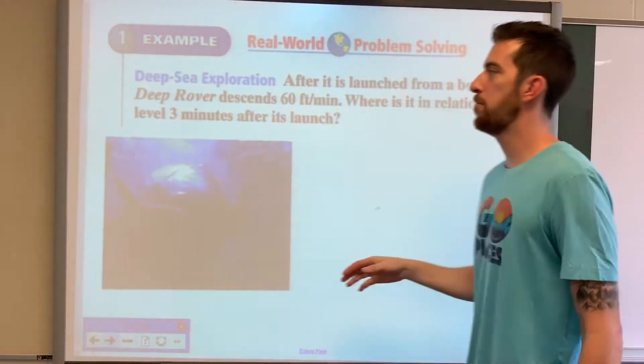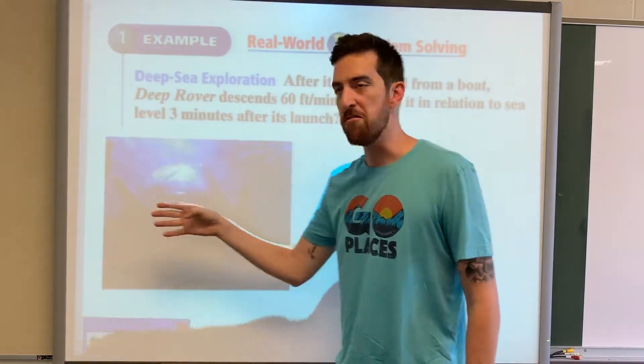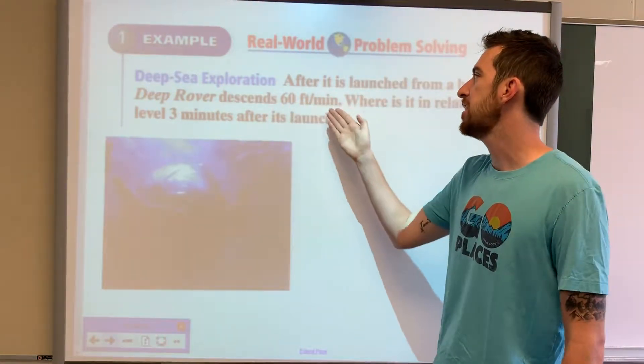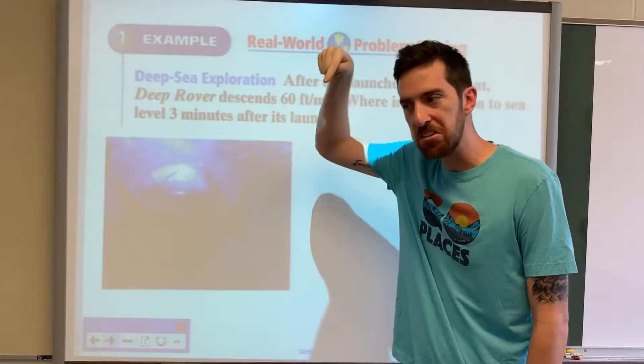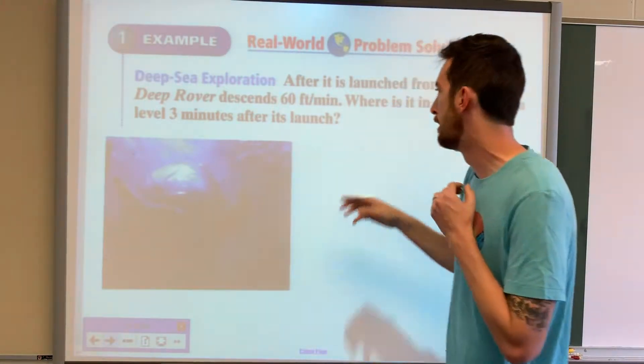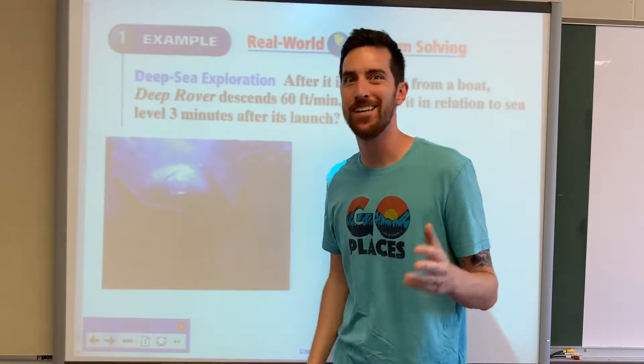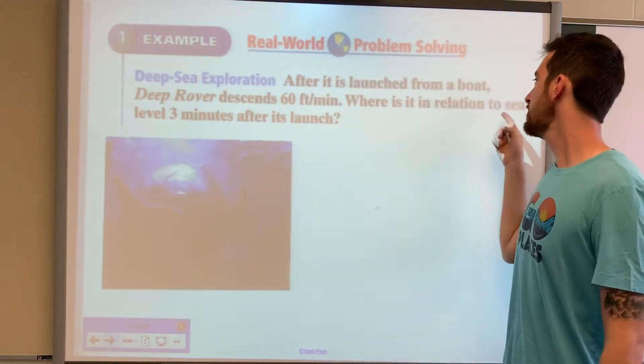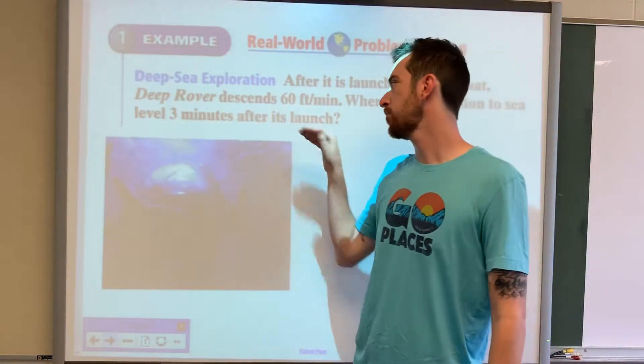After it is launched from a boat, Deep Rover descends 60 feet per minute. That means swims down, descending. Do you know what it's called when you go up? Ascending. Where is it in relation to sea level three minutes after its launch?